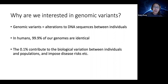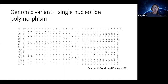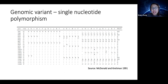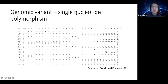Genomic variant calling is essentially the process of finding out what that 0.1% of differences are and where they are located. Looking at our genome, there are all different sorts of variations. The simplest type is literally one base pair that differs between individuals — originating from a point mutation. When we see these single base-pair differences across many individuals, we call those single nucleotide polymorphisms, or SNPs.